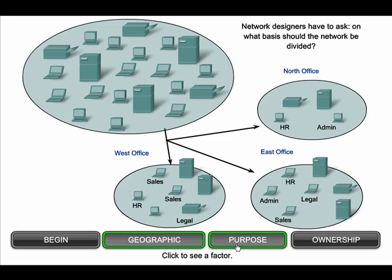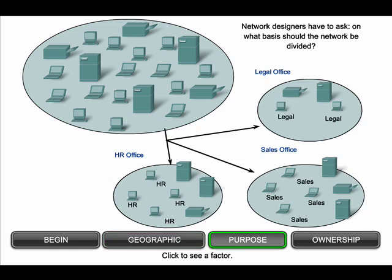Dividing networks based on usage facilitates the effective allocation of network resources, as well as authorized access to those resources, and this would be an example of grouping by purpose. Using an organizational basis for creating networks assists in controlling access to devices and data and eases the administration of the network. Finally, dividing hosts into separate networks provides a boundary for security enforcement and management of each network, and this is one reason to group based on ownership.